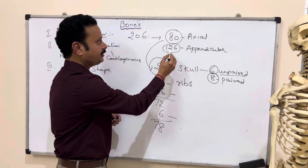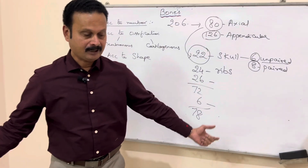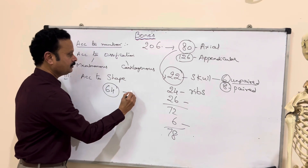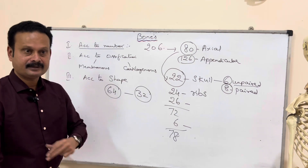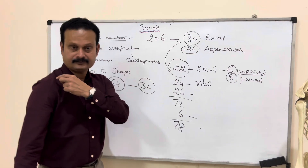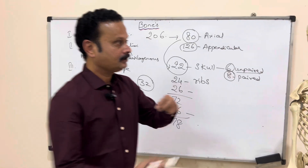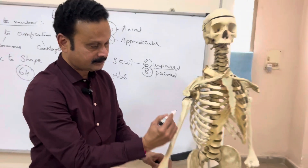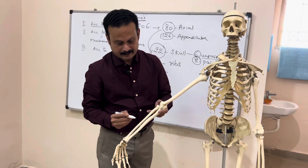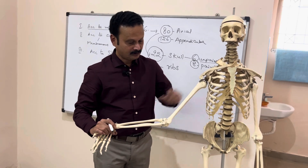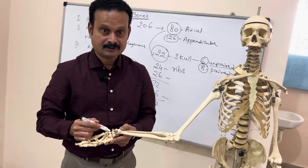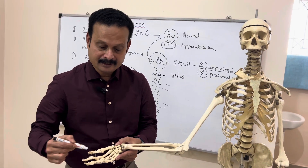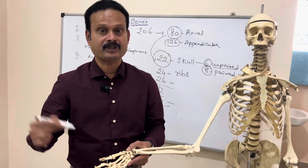Coming to the appendicular skeleton, that is bones belonging to the upper and lower limbs. There are 64 bones in the upper limbs, 32 on each side. In those 32: clavicle, scapula, humerus, ulna, radius — that comes to 5. There are 8 carpal bones, giving 13. There are 5 metacarpal bones, giving 18, and there are 14 phalanges, so 18 plus 14 equals 32.